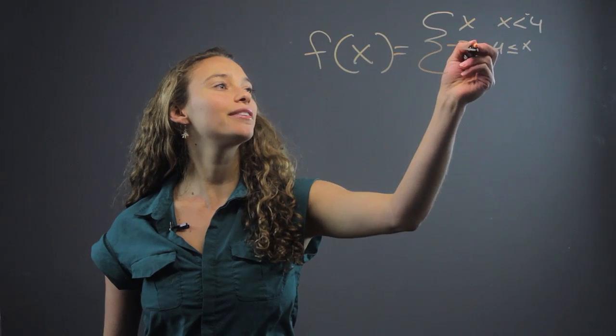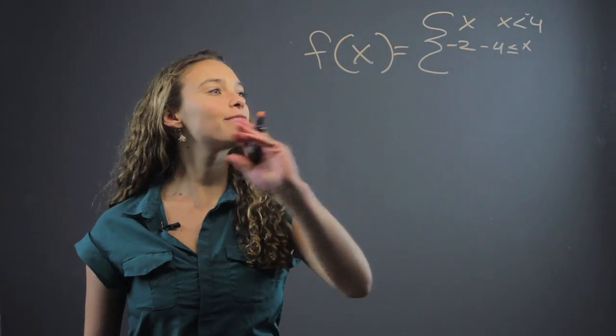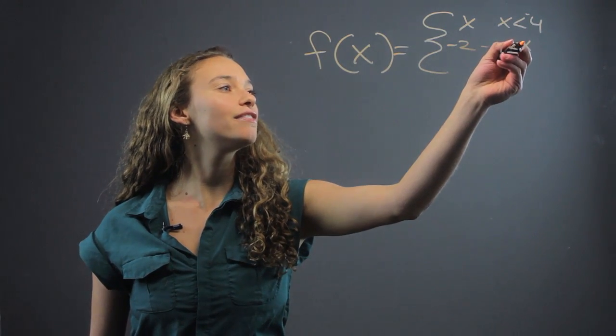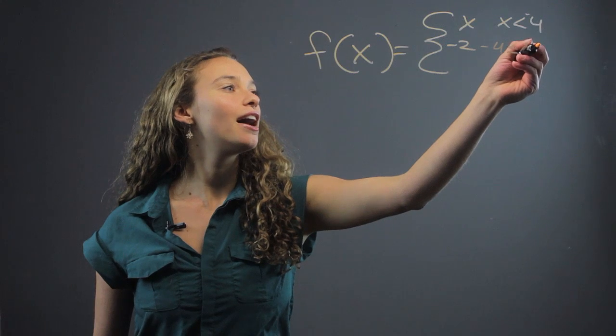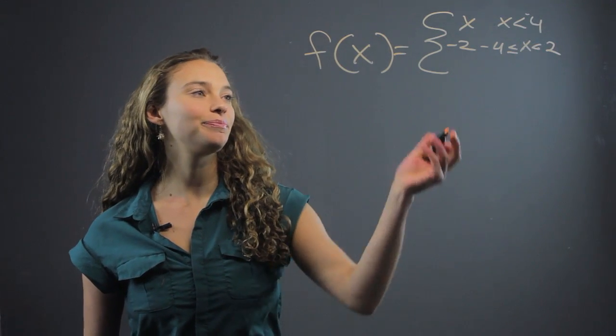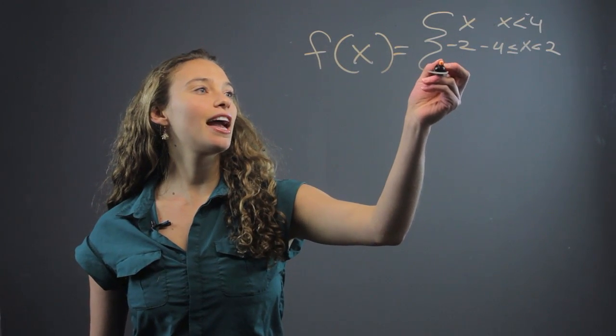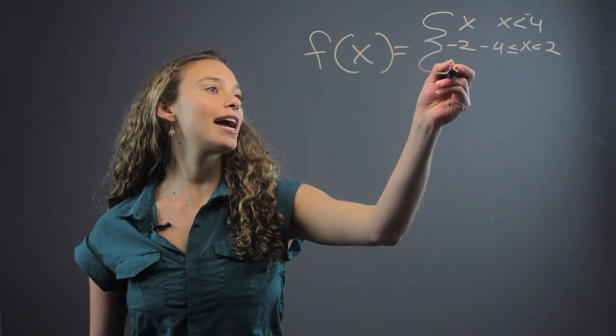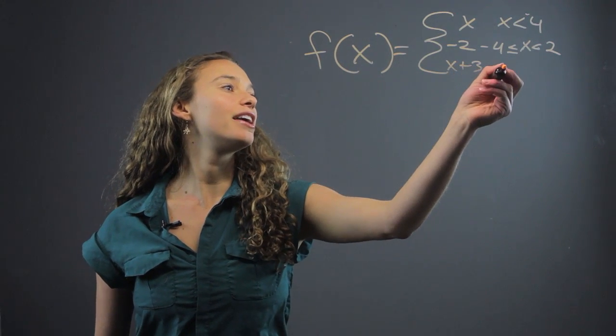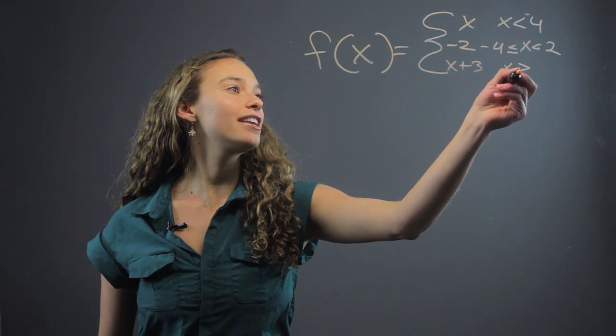Let's make it negative four, so we'll show the negative part of the equation. Negative four, and we'll say less than two. And then we'll say it's x plus three, when x is greater than two.